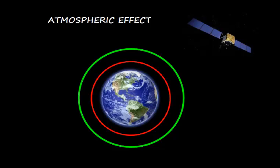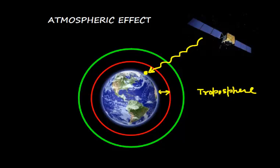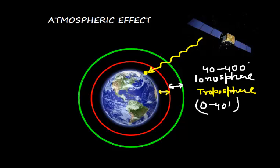The GPS signal travels from the satellite to the receiver on board a ship. The signal passes through the atmospheric layers — the troposphere and, above it, the ionosphere. The GPS satellite signal passes through these layers of atmosphere.